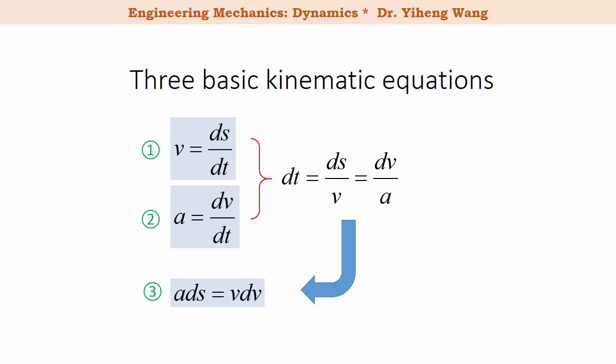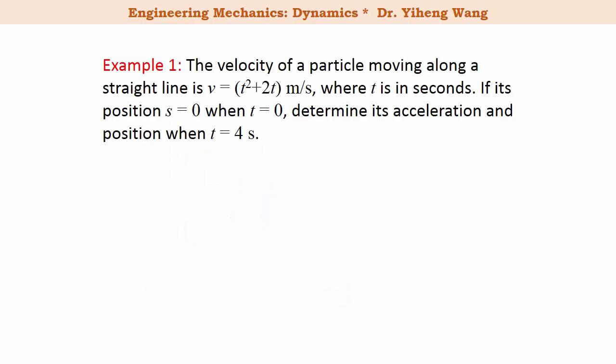Let's look at some examples. Some problems are quite straightforward, like this one. The particle's velocity is given as a function of time, the initial position is zero, and we need to determine its acceleration and position at time t equals 4 seconds. Let's look at the first part: the acceleration.